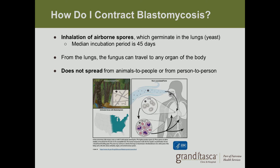How does one get blastomycosis? It is usually through inhalation of the airborne spores produced by the fungus. Those spores germinate in the lungs. The median incubation period is roughly 45 days, so the peak reporting month of September suggests that being out active in the woods and enjoying the summer months is when one might be more prone to contracting blastomycosis. Once it has infected the lungs, the fungus can travel to any organ of the body. It is important to note that the fungus does not spread from animals to people or from person to person.